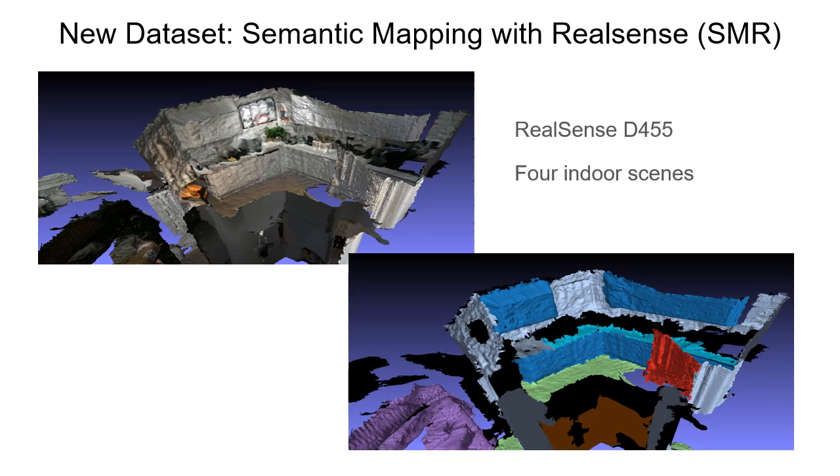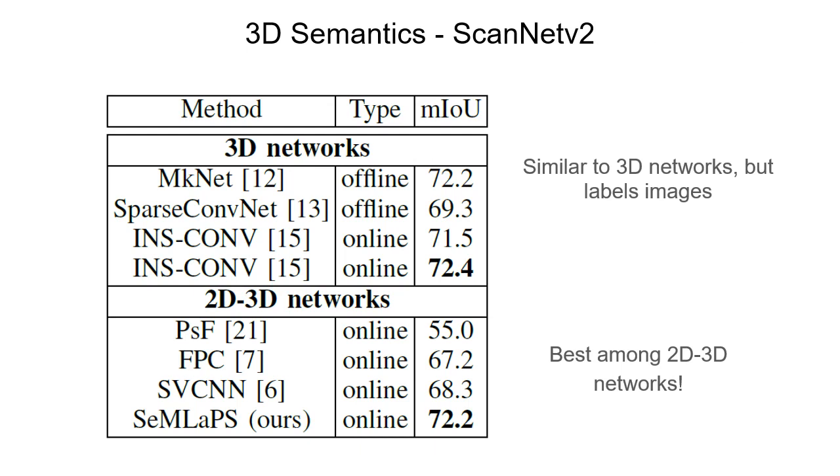First, we show 3D results on ScanNet validation sequences. SemLaPS achieves the best result among 2D-3D network-based methods, and matches the performance of the 3D network-based methods, but also provides 2D semantic labeling, which is important for other semantic SLAM tasks, and facilitates the cross-sensor generalization ability, which we will show later.